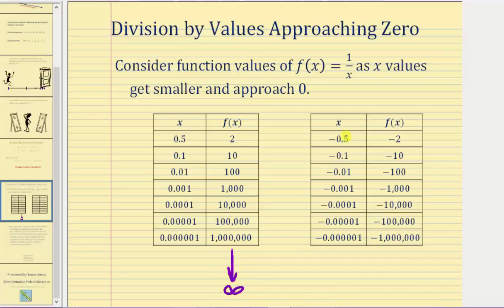Now if we approach zero from the negative side, something similar happens, but notice how the function values are now negative, so they're decreasing without bound — or decreasing endlessly — and therefore we can say that the function values are approaching negative infinity.